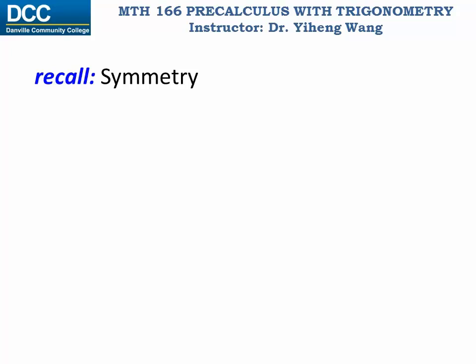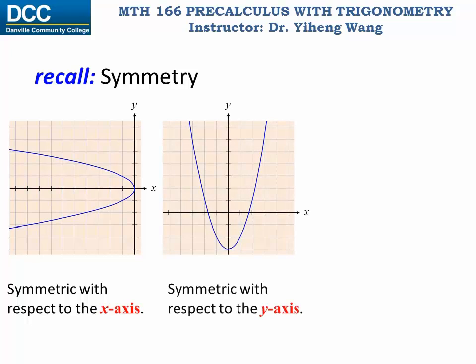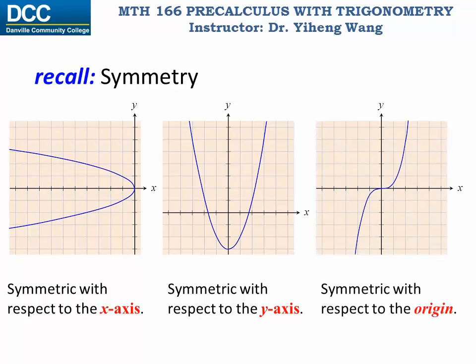If you recall, we discussed the symmetry in the graphs for equations. There are three types of special symmetry. The graph could be symmetric with respect to the x-axis, it could be symmetric with respect to the y-axis, or it could be symmetric with respect to the origin.